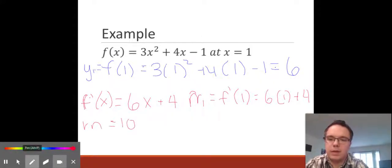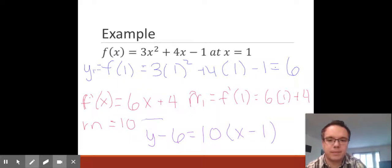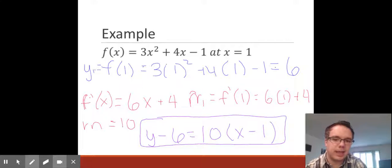Once we have our slope, we can write our equation. We're going to have y minus that y-value we found, which is 6, equal to our slope of 10 times x minus our x-value, which was 1. So our equation of our tangent line is y - 6 = 10(x - 1).